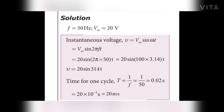Now we calculate the time period for one cycle. T = 1/f = 1/50, which gives T = 0.02 seconds, or 20 milliseconds.